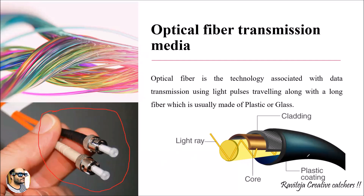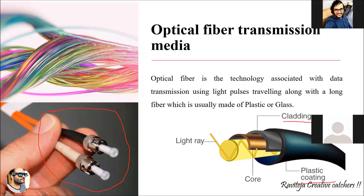The first layer is plastic material, called the plastic coating. The next layer, if you remove that plastic layer, is called cladding. And if you remove the cladding layer, you find one more layer called the core. So mainly there are three layers: plastic coating, cladding, and core. Whatever light ray or signal you are transmitting will be going through this core, and it can transmit data very, very fast compared to other technologies.